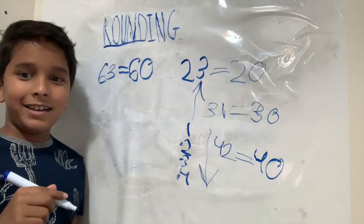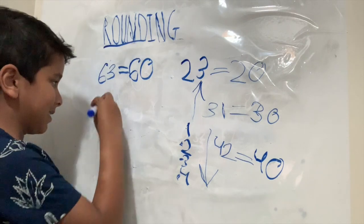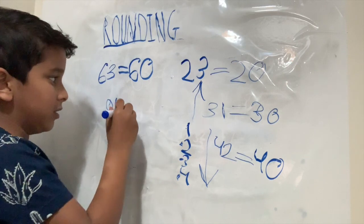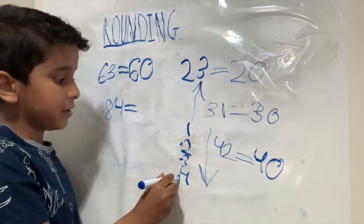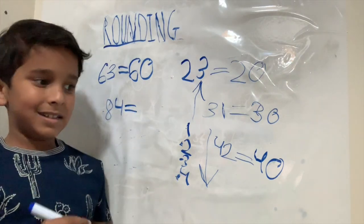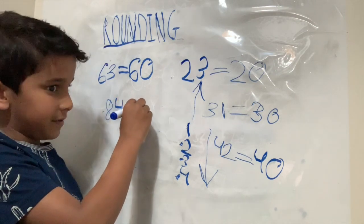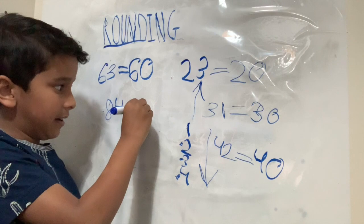Let's take another example. 84. It ends with 4. So rounded to the nearest ten, it will become 80.